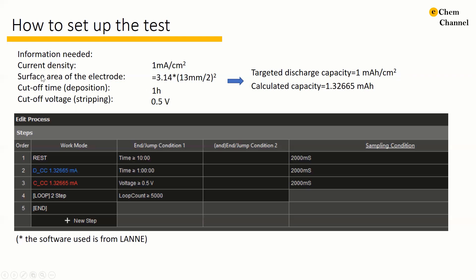If the electrode that I use is 13 mm in diameter, then the capacity of the deposition process is 1.3265 mAh. For the stripping process, I set the cutoff voltage of 0.5 V. So in this screenshot, I set the discharge and charge current, the cutoff time of the deposition and cutoff voltage of the stripping process. I also add a rest step and a cycle step.